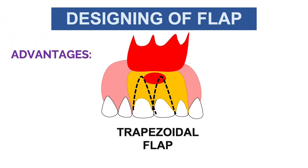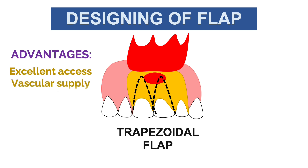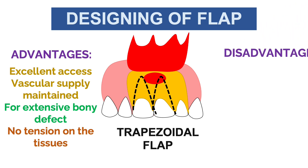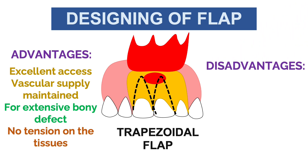We use the trapezoidal flap in cases of large periapical pathology involving more than one tooth. Advantages include excellent access, since this is a large flap. Vascular supply is maintained, and this flap is used for extensive bony defects. There is no tension in the tissue because we give two vertical relieving incisions, so the flap is easily raised without tearing. The disadvantage is that closure is very challenging.